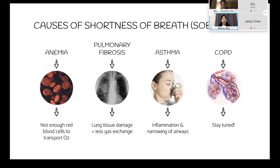Pulmonary fibrosis tends to be more ambiguous in terms of cause. Smoking is a risk factor leading to idiopathic pulmonary fibrosis. Other times it's from exposure to chemicals such as asbestos, and also autoimmune diseases like rheumatoid arthritis, or chemotherapy and other medications can lead to lung scarring and difficulty breathing. Lastly, asthma and COPD — asthma causes inflammation and narrowing of the airway, making it hard to get enough oxygen. We'll be covering COPD shortly.